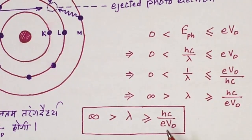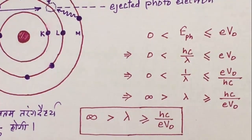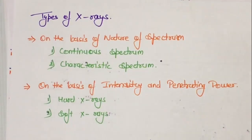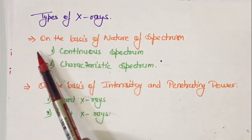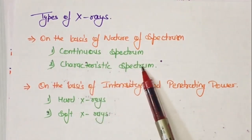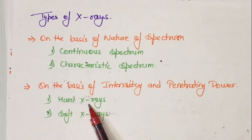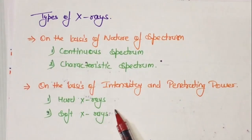X-rays of maximum frequency are produced only when the total kinetic energy of the electron is used to emit a photon during collision, with no energy lost as heat. A minimum wavelength corresponds to a photon of maximum energy and frequency. From the graph, we cannot obtain photons of wavelength less than λ_min. On the basis of nature of spectrum, X-rays are of two types: continuous spectrum and characteristic spectrum. On the basis of intensity and penetrating power, they are hard X-rays and soft X-rays.